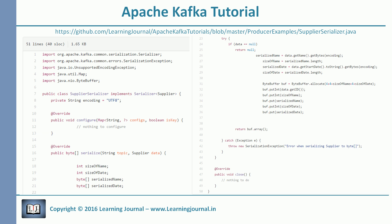If you remember the previous session where we implemented a custom partitioner, you can recall this pattern. We had a similar interface for partitioner. Configure and close are for initialization and cleanup, and the Kafka producer will call these methods once. It will call configure when we instantiate the producer and call close when we close the producer. But in our example, we have nothing to do with the configure and close methods, so we leave them empty.